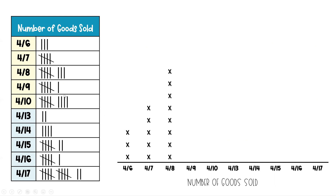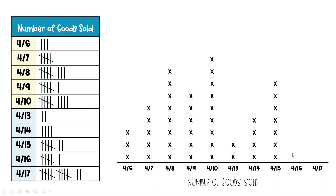Moving on to the 9th, that would be six items sold — six X's. On the 10th, we're going to have nine sold that day. Moving on to the second week: on the 13th there were two, so two X's. The 14th, four X's. On the 15th, seven X's. On the 16th, six X's. And on the 17th — the last day — there were twelve X's.